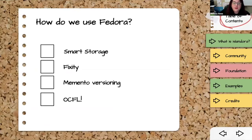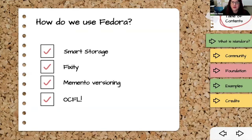In the new bento box stack we're using Fedora for the things it's really good at: smart storage. In Islandora 8 we were using Fedora as the database layer, storing things that didn't need to be there — thumbnails being served up by Fedora, for instance, which it wasn't meant for. Now we're using Fedora purely as a preservation layer, only putting things in there you actually want to preserve. More transient files stay at the Drupal layer for faster serving with less resource intensity.